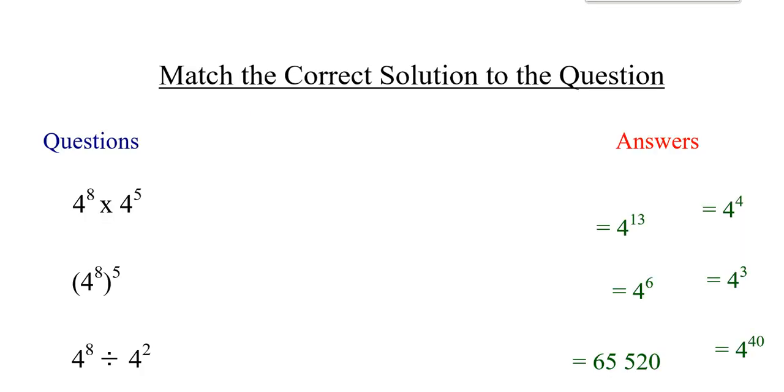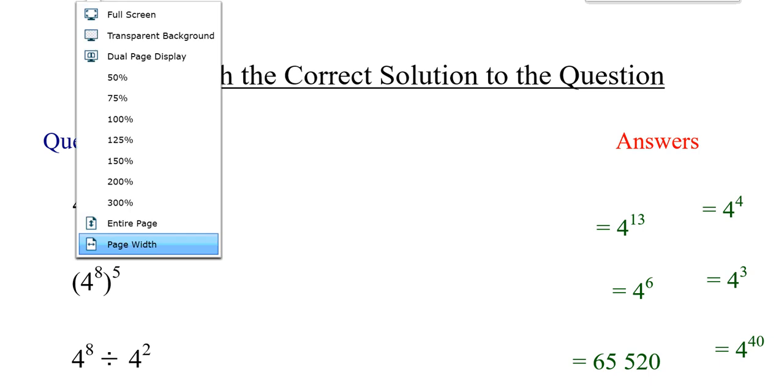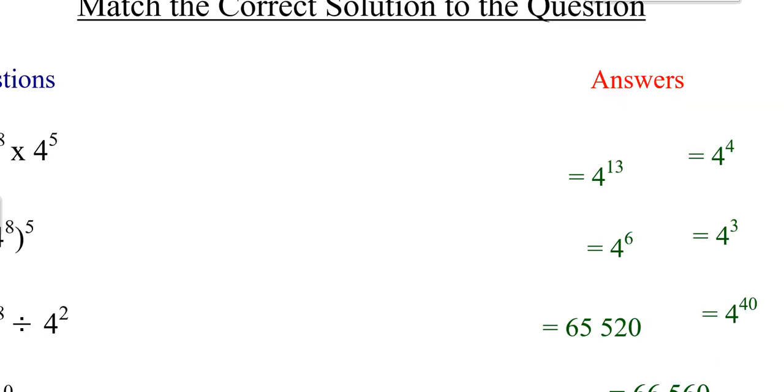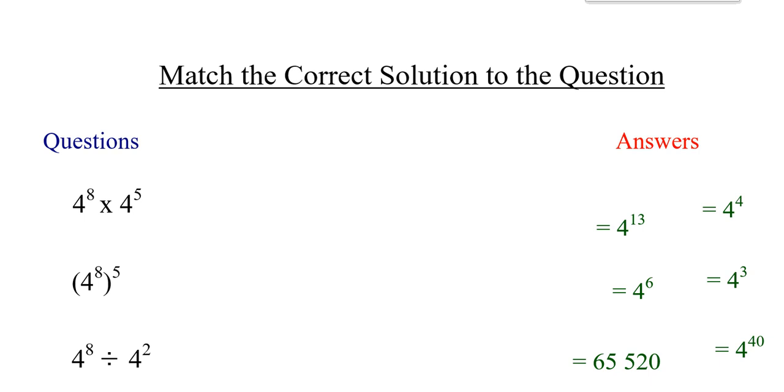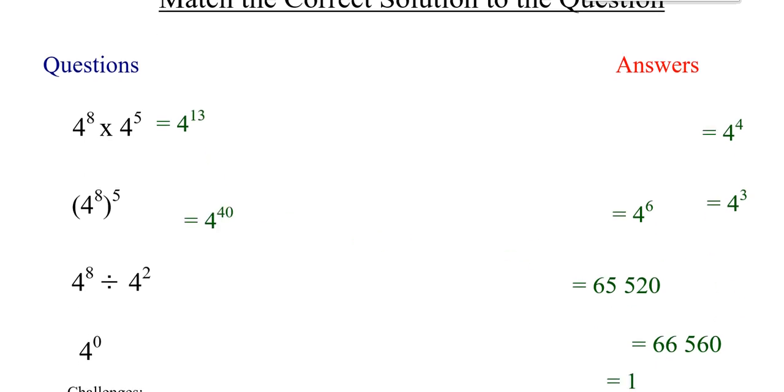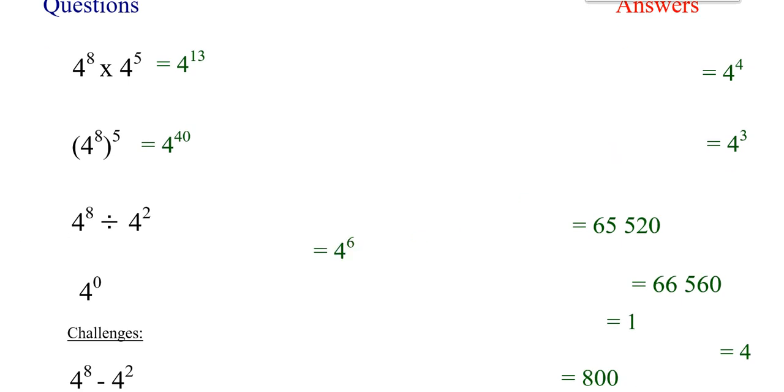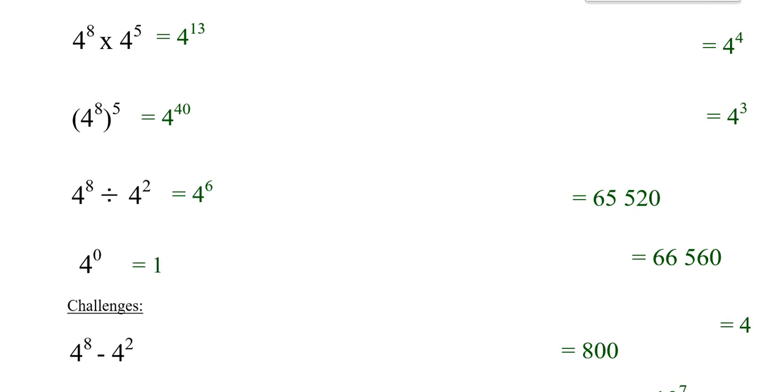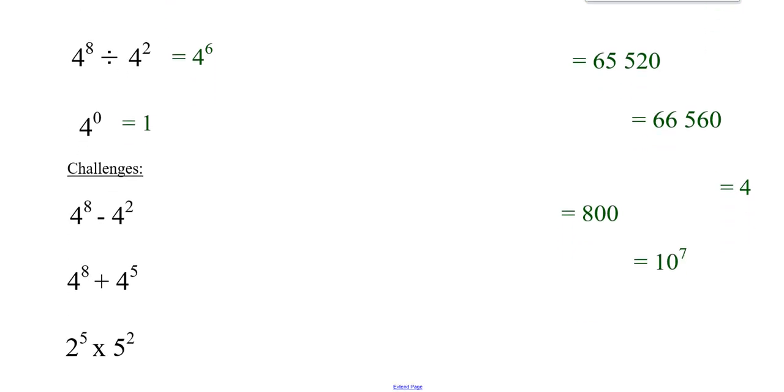Let's look at a few examples. Sorry about that, let me go back. So 4^8 × 4^5 will become 4^13, we add. (4^8)^5 becomes 4^40, we multiply. The next one, we're dividing powers with the same base, we subtract. The next one, we're raising a power to the exponent of 0, so it equals 1.